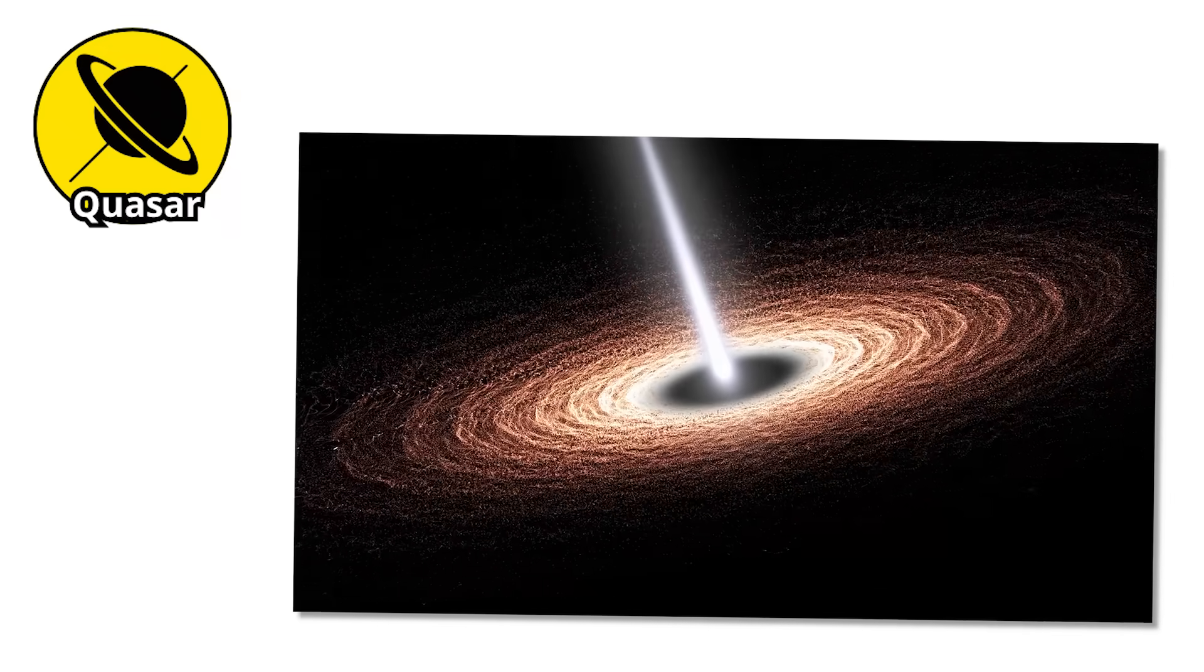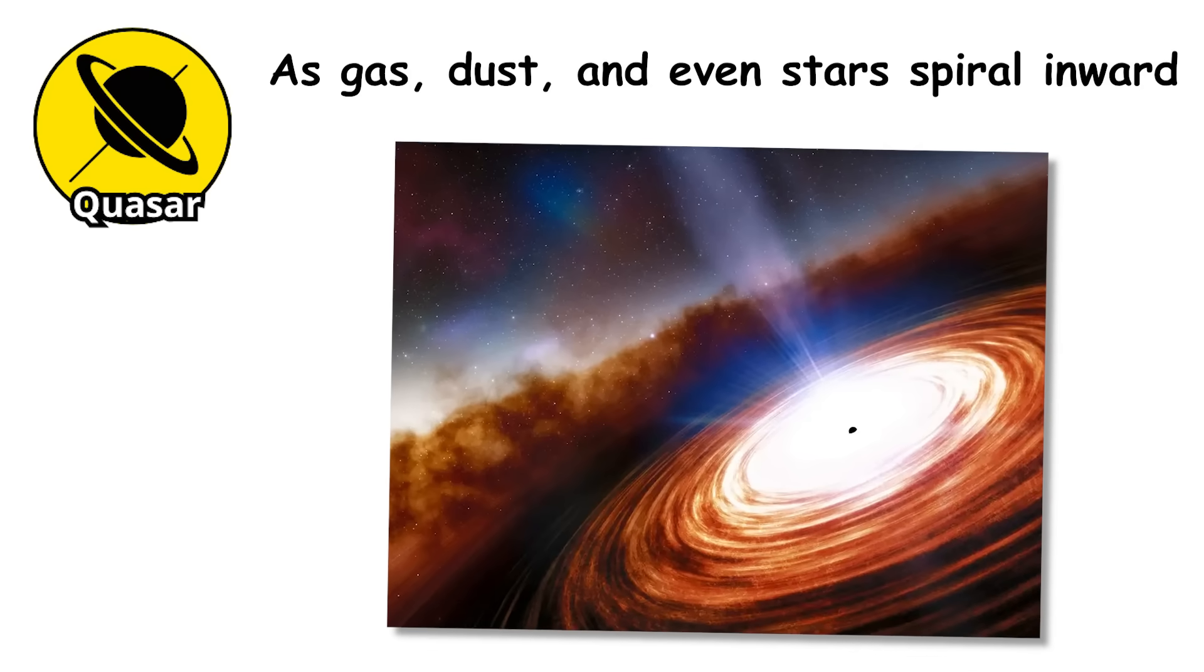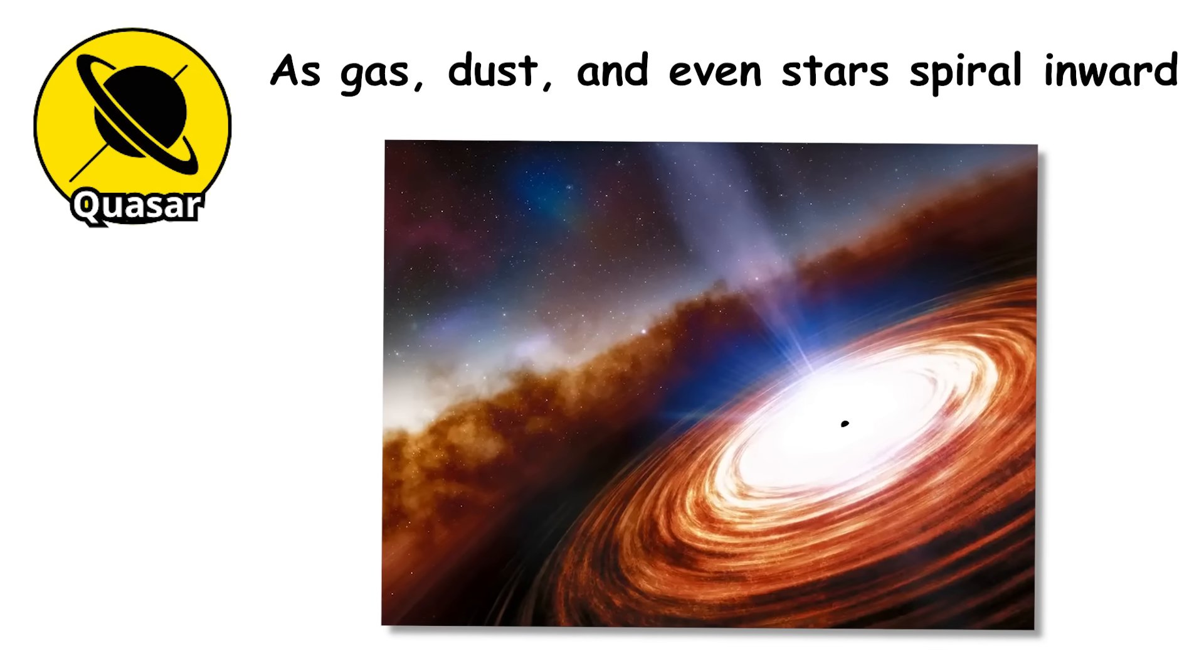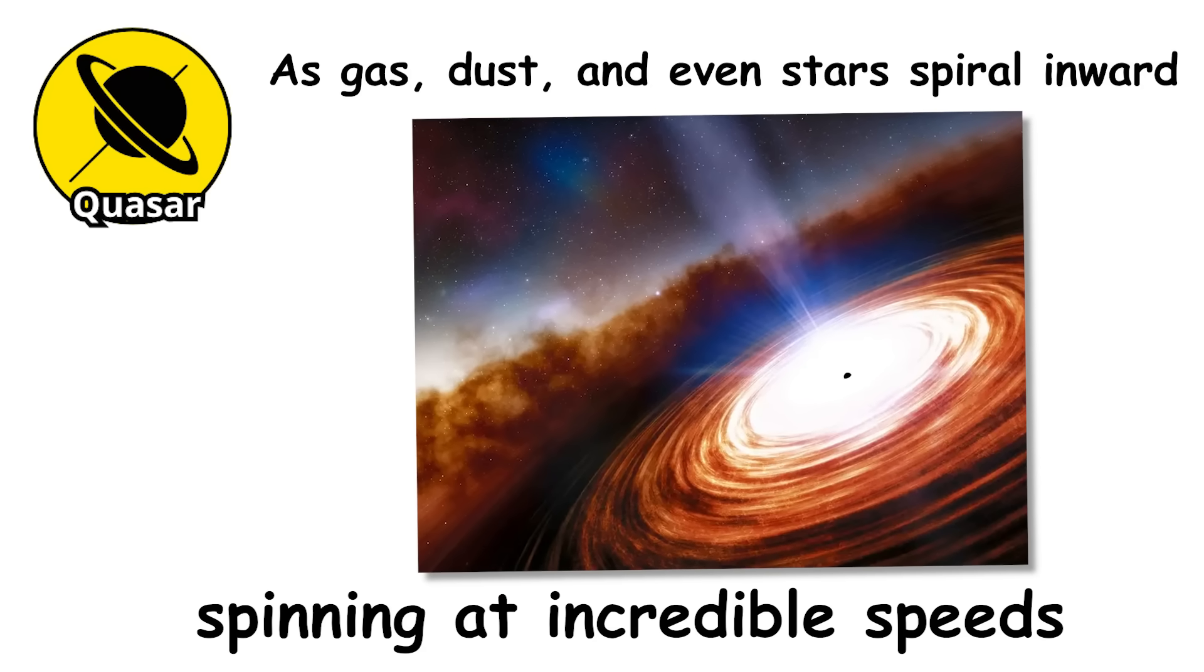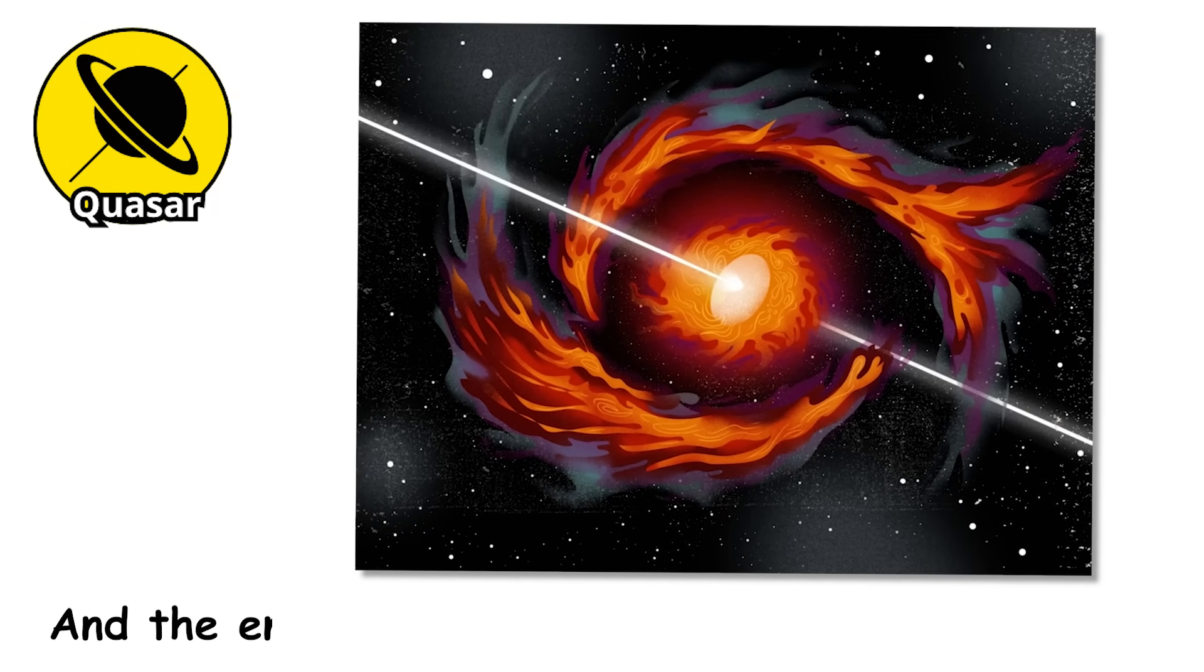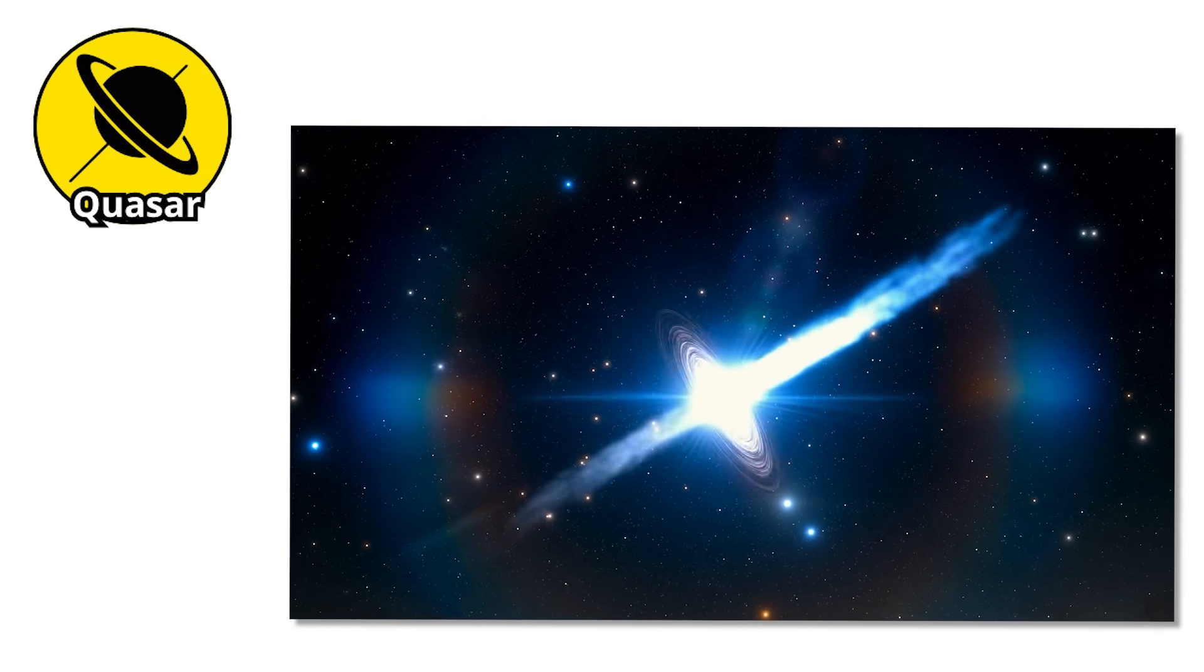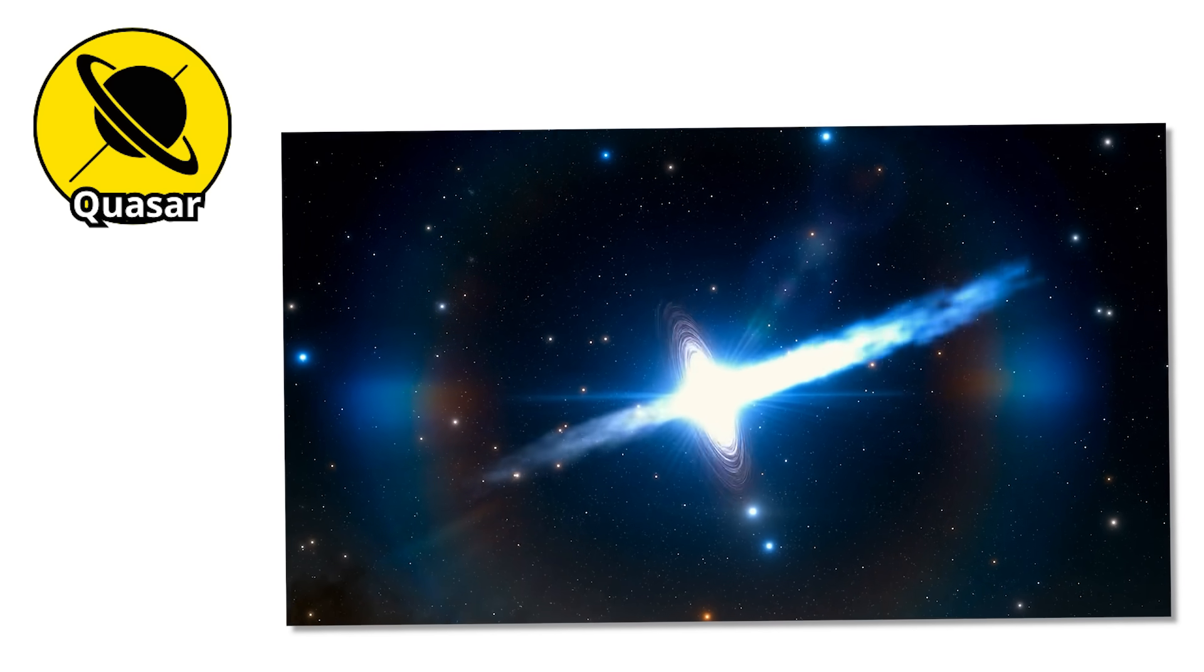Quasars form when a supermassive black hole starts consuming enormous amounts of matter. As gas, dust, and even stars spiral inward, they form a blazing hot disk spinning at incredible speeds. Friction heats the disk to unimaginable temperatures, and the energy released shoots out in all directions. Some quasars even fire out massive jets of radiation and particles that stretch across entire galaxies.